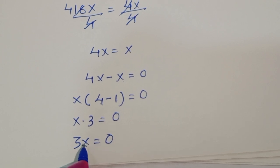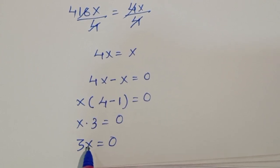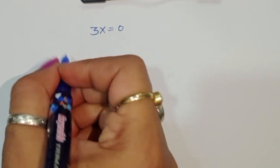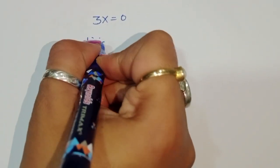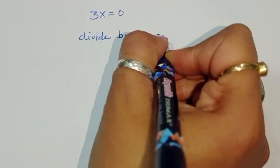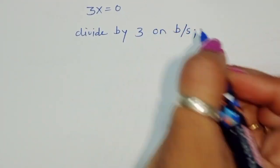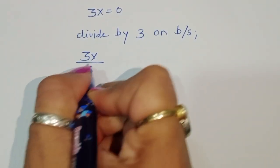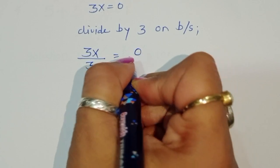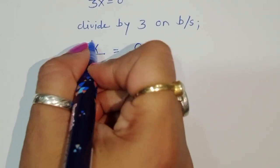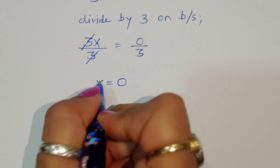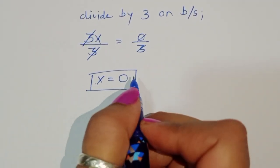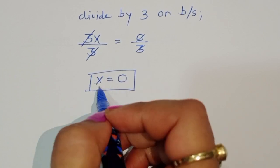So 3x is equal to 0. We divide both sides by 3: 3x divided by 3 is equal to 0 divided by 3. The 3 cancels, so x is equal to 0. Again we get x is equal to 0, the same value as in the first method.